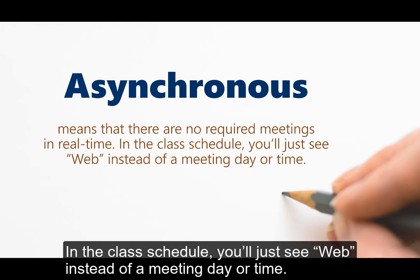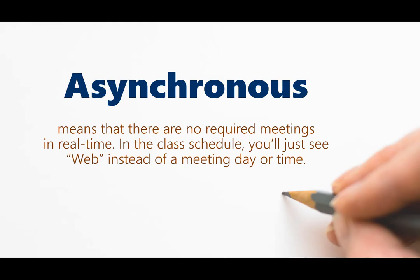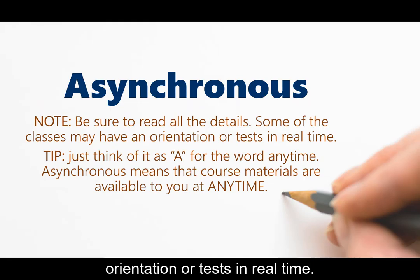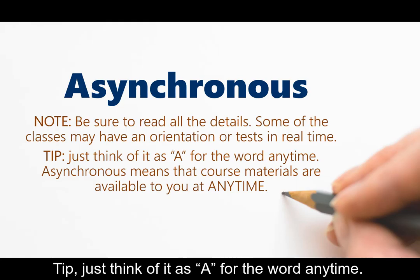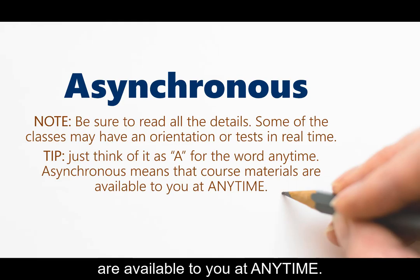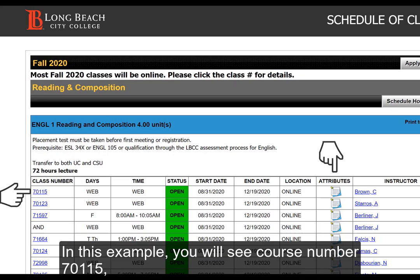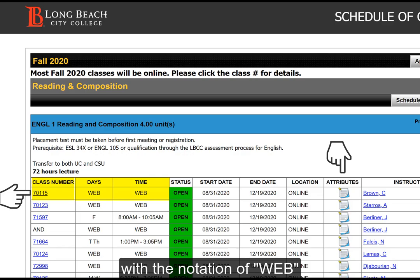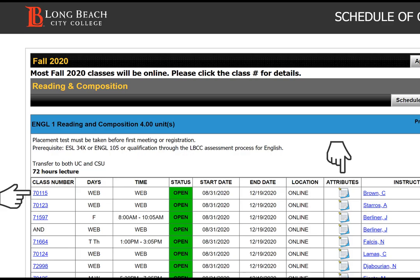Asynchronous means that there are no required meetings in real time. In the class schedule, you'll just see 'web' instead of a meeting day or time. Note: be sure to read all the details, as some classes may have an orientation or test in real time. Tip — just think of it as A for the word 'any time.' Asynchronous means that course materials are available to you at any time. In this example, you'll see course number 70115 with the notation of 'web,' and therefore it is an asynchronous class.